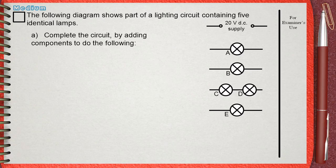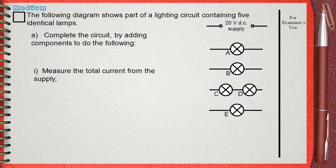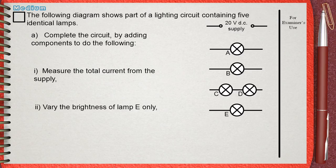Complete the circuit by adding components to do the following. Number 1: Measure the total current from the supply. Number 2: Vary the brightness of lamp E only. Number 3: